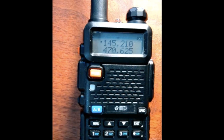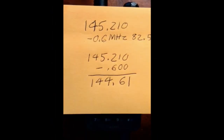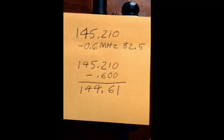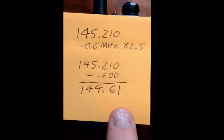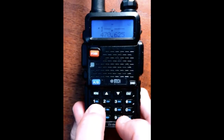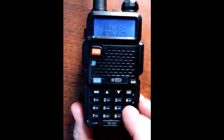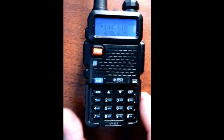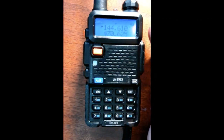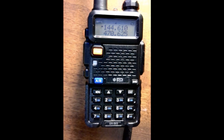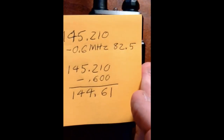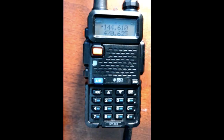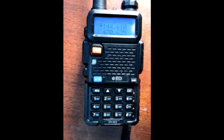Now we want to enter the transmit frequency, which is 144.610: 1, 4, 4, 6, 1, 0. That's the frequency we want to transmit on. The next question is: is there a tone on this repeater? When you look up in the repeater guide, you'll see if there's a tone. There is a tone, and it's 82.5.